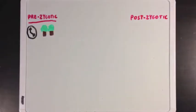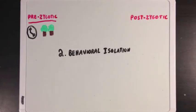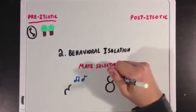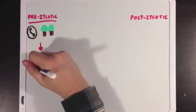If time and place aren't a problem, then the next barrier is behavioral isolation, which refers to mate selection and how organisms go about attracting a mate. Not all organisms will attract a mate the same way. Perhaps one animal, like a bird, will attract a mate by singing a song, whereas this bunny rabbit may do a little dance to attract a mate. So we have behavioral isolation.